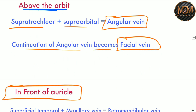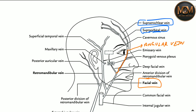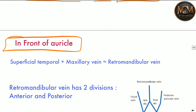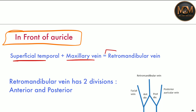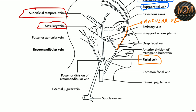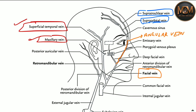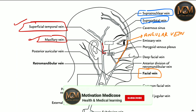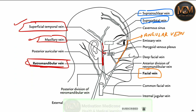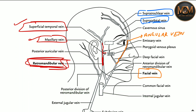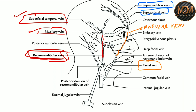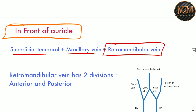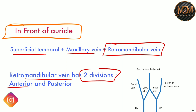Now let's consider the veins in front of the auricle, that means in front of the ear. There are two veins present here: the superficial temporal vein and the maxillary vein. These two veins join together to form the retromandibular vein. As you can see in the diagram, this retromandibular vein travels downward and divides into two divisions — anterior and posterior.